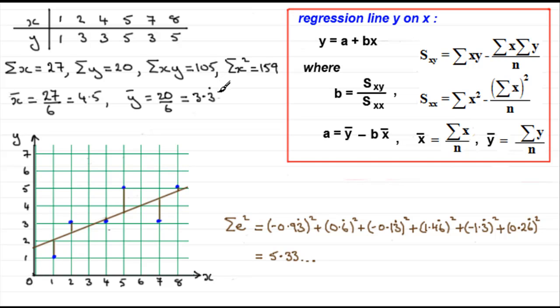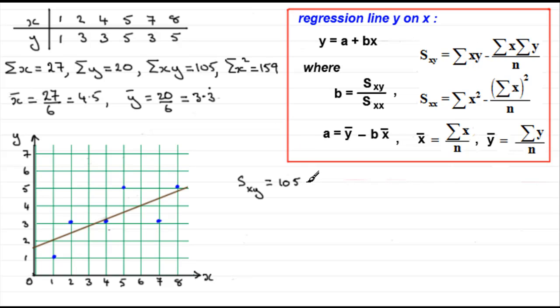Now we need to work out our statistics s_xy as well. So we'll take this out. So we put in s_xy equals, now it's going to be sum of xy, which we can see is 105, then minus sum of x times sum of y, all divided by n. Well, sum of x is 27, so we've got 27 times the sum of the y's, which is 20, and we divide that by n, which is 6.